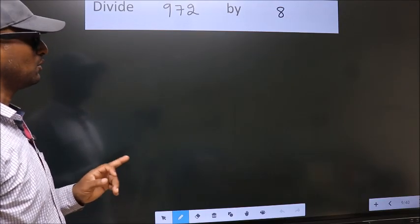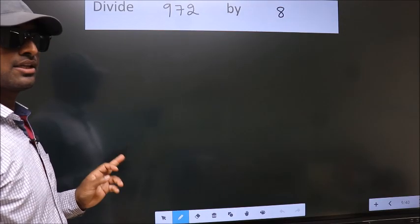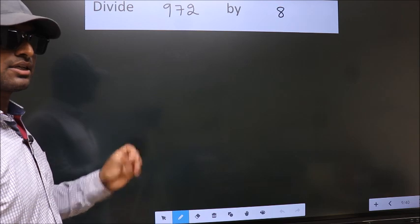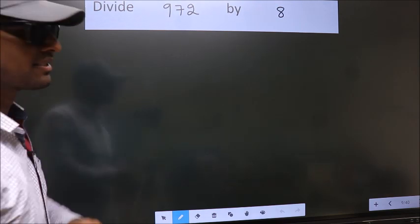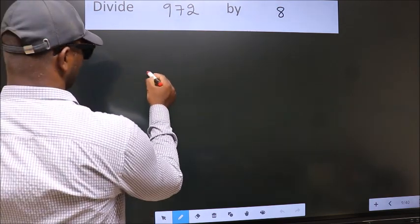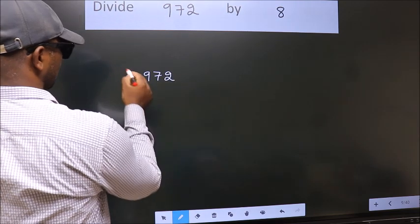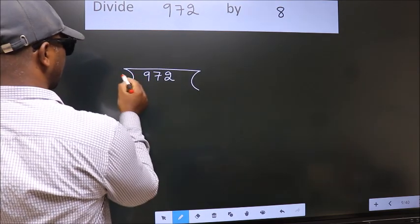Divide 972 by 8. To do this division, we should frame it in this way. 972 here, 8 here.